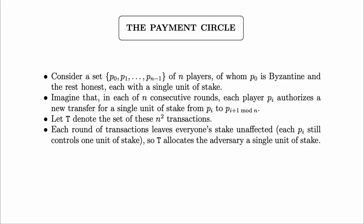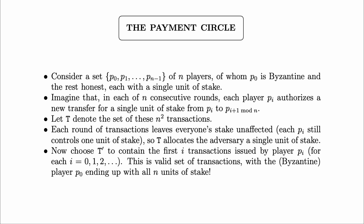That's n² transactions overall — n in each round over n rounds. Each round of transactions leaves everyone's stake unaffected, so the set of transactions T allocates the adversary still one unit of stake, which is 1/n of the total. But then the question is: can we extract some subset of those transactions which allocates the adversary more than 1/n of the stake? Yes, we certainly can. Choose T' to contain the first i transactions issued by each player pi — just enough transactions to get each unit of stake to p0, our Byzantine player. This valid subset T' gives p0 all n units of stake. So while T gives everybody one unit of stake, if we take the subset T', the adversary ends up owning all the stake.